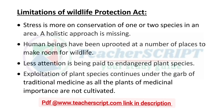Limitations of the Wildlife Protection Act: Stress is more on conservation of one or two species in an area; a holistic approach is missing. For example, one-horned rhinoceros, elephants, Asiatic lion, and Bengal tiger — there are particular endangered species in an area they are trying to work with. Also, human beings have been uprooted at a number of places to make room for wildlife.